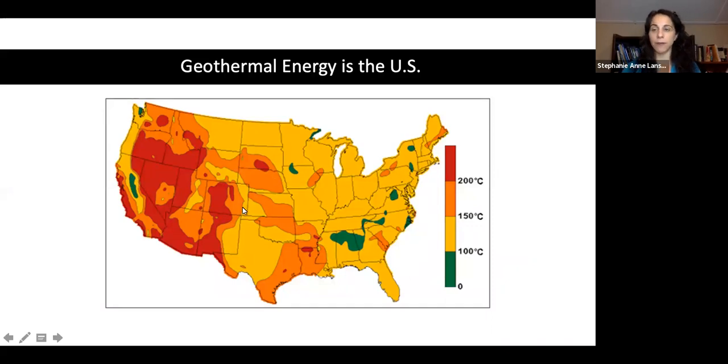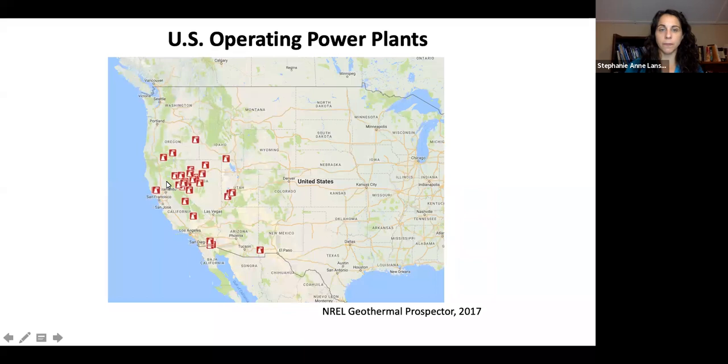Most favorable versus least favorable means temperatures ranging from zero to 200 degrees Celsius. We do have U.S. operating plants producing geothermal electricity. Here in Maryland, we have heat pumps at the University of Maryland, but on the west coast is where we actually produce electricity. These are all our geothermal power plants in the U.S.